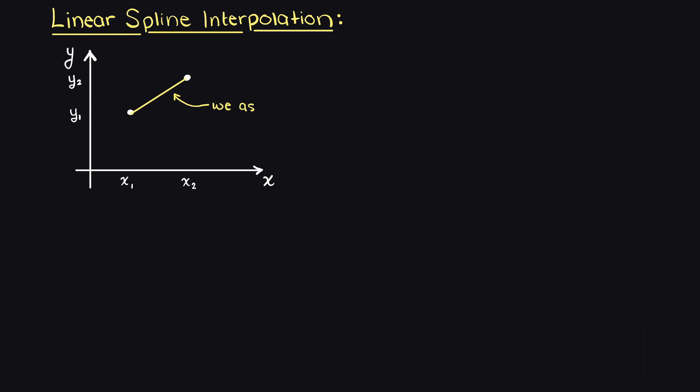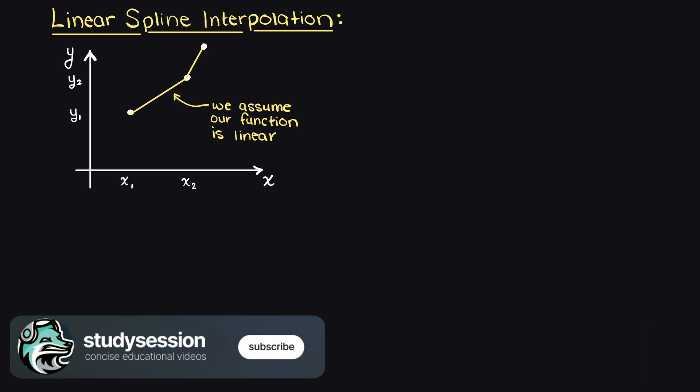In linear spline interpolation we use the assumption that between our data points of interest our system is linear. This means that we can connect our data points directly through straight lines, which if you remember is a first order polynomial.